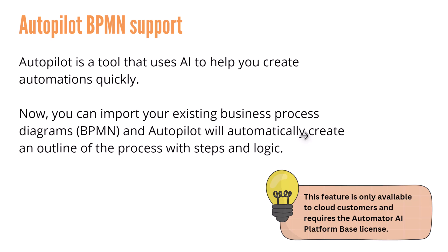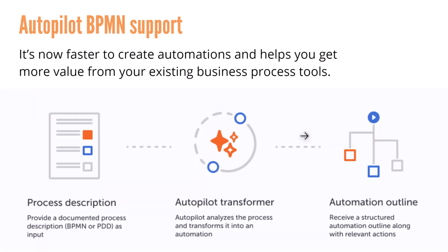This feature is only available to cloud customers and requires an Automation AI platform-based license. It's now faster to create automation. You get the process description, BPMN, or PDD diagram, feed that data to autopilot, and it analyzes the process and transforms it into an automation. The end result is a workflow — the process flow automation outlined — that you can build on top of.